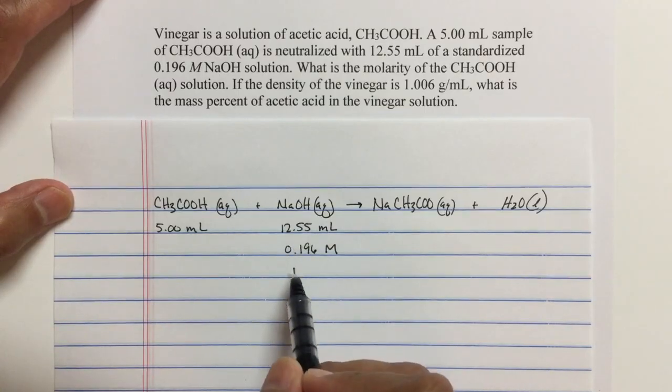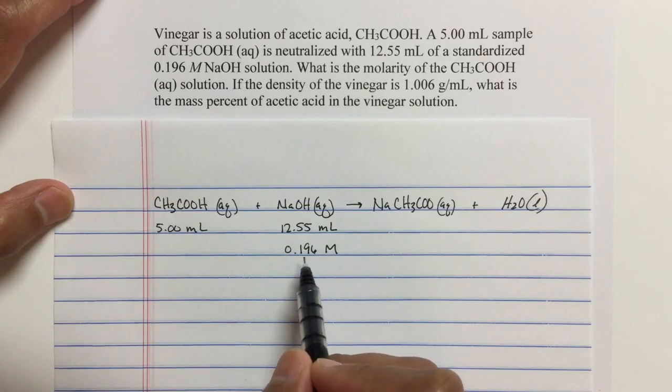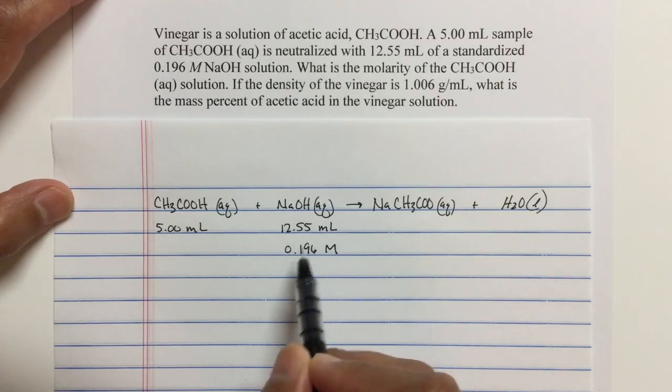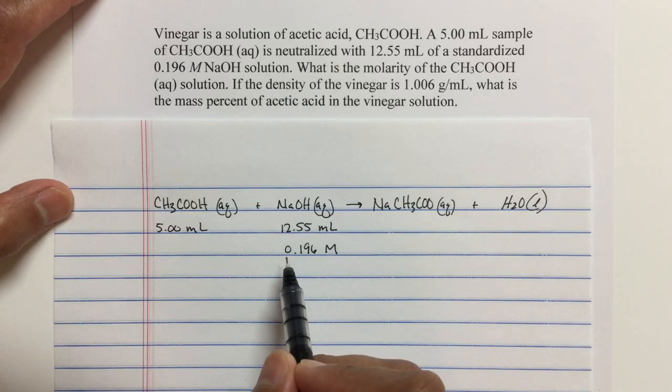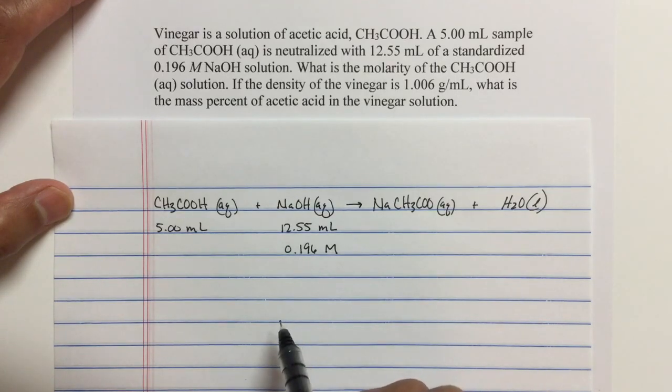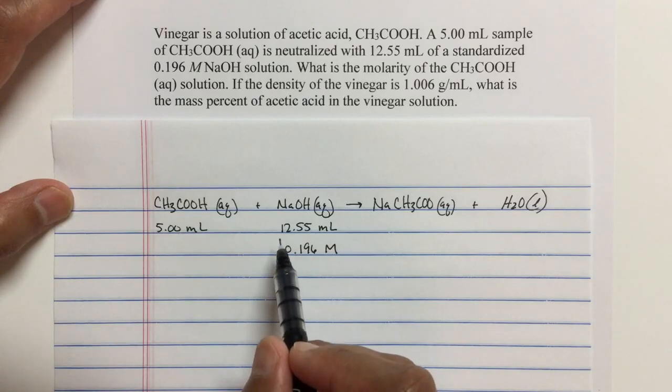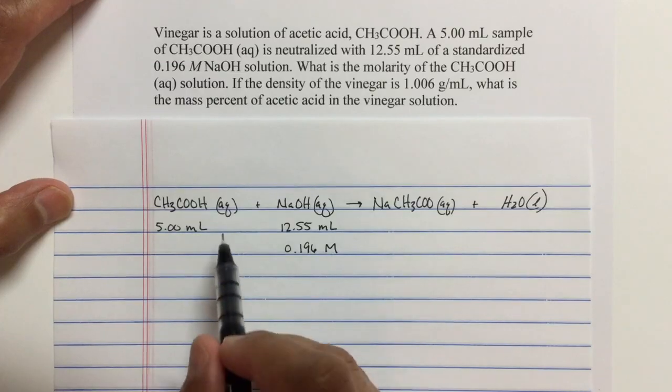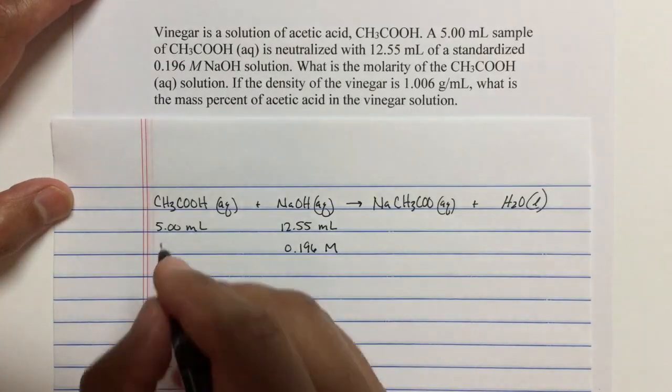So the base has been standardized. And there's a video that I posted where we talk about standardizing the NaOH, finding this number right here. So in this example, the sodium hydroxide is a 0.196 molar solution. And it costs us 12.55 milliliters to reach the end point, to neutralize all of the acid.